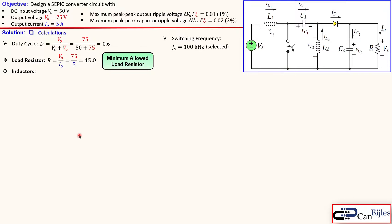For inductors L1 and L2, let's look at the average inductor currents. For L2, the average inductor current is equal to the output or load current. The average currents of all capacitors are zero at DC, so the average current of L2 equals the diode current, which equals the load current since the average current of capacitor C2 is zero. Since the load current is 5 amps, the average current of L2 is also 5 amps.